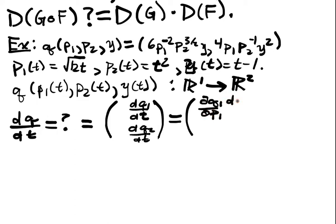But then we can use the chain rule on each of these little guys, our normal little chain rule. So this is going to be (∂q1/∂p1)(dp1/dt) plus (∂q1/∂p2)(dp2/dt) plus (∂q1/∂y)(dy/dt). That's my first component.